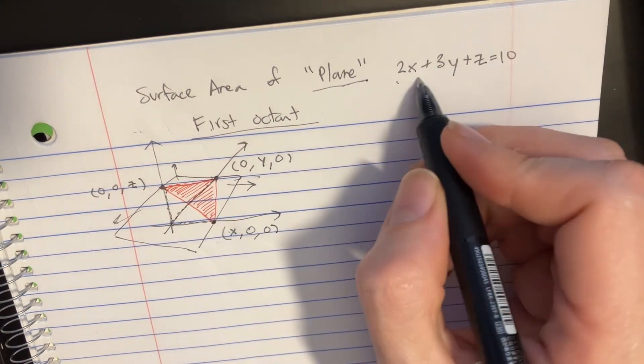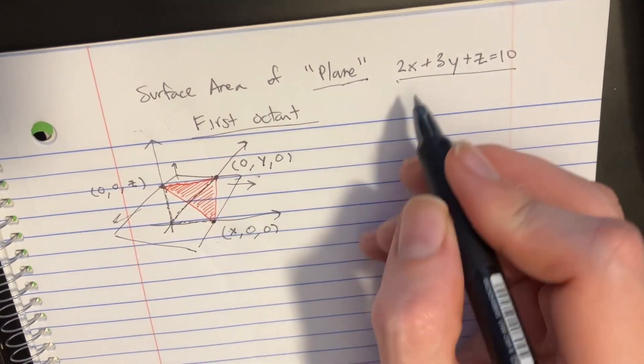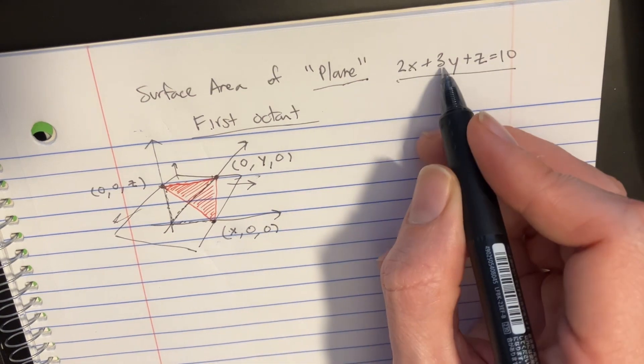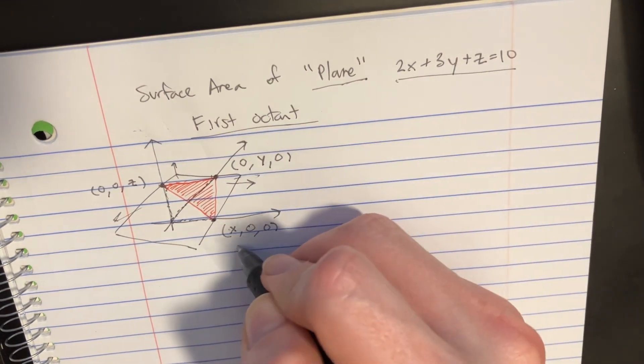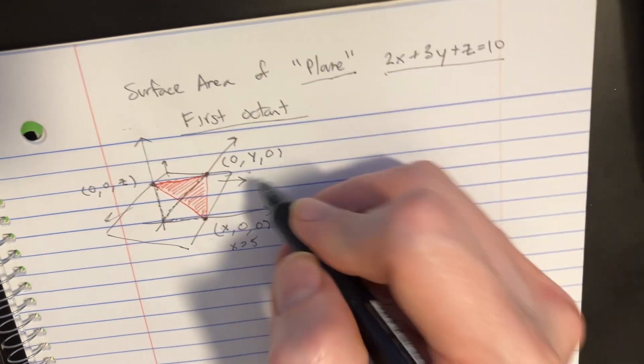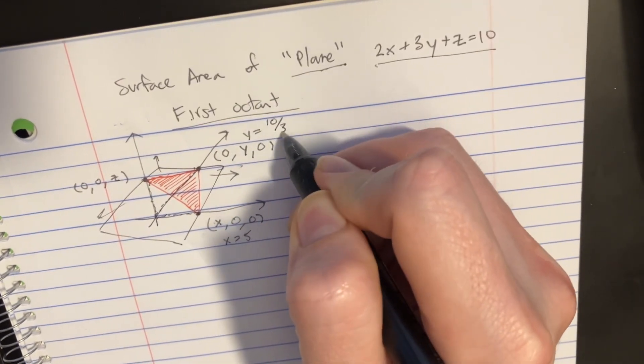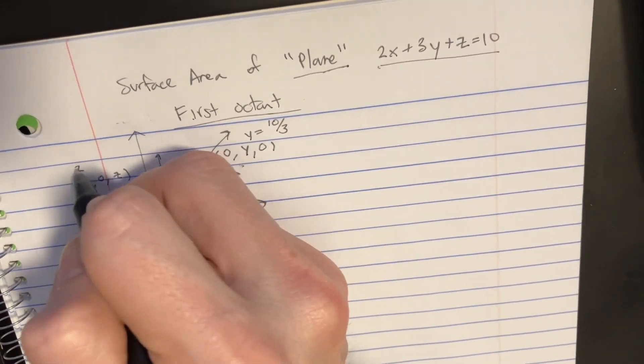Let's try to actually use this equation to figure out what those points are. If we set x equals zero, we would get y equals 10 over 3, and here we get z equals 10.